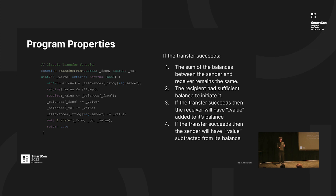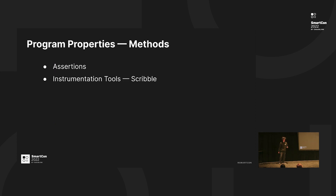The other properties are: once the transfer executes, the receiver gains a value amount of tokens and the sender loses a value amount of tokens. One way to annotate these program properties is by using assertions. But it gets a bit messy, because you are changing the code, and this can be a bit problematic.